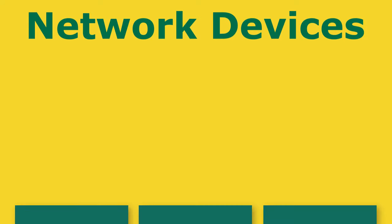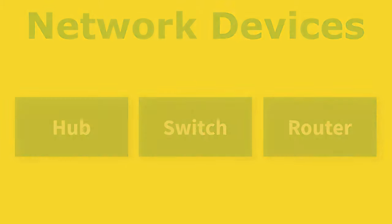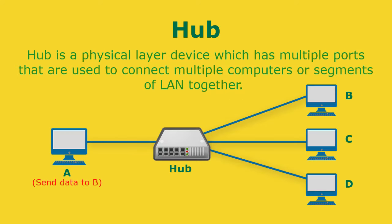With a NIC or Wi-Fi card your device is ready to talk to other devices. Now you need either a hub, switch, or router to connect to other computers. A hub is a physical layer device which has multiple ports used to connect multiple computers or segments of a LAN together. Data is transferred in packets to the entire network, so when a host sends a data packet to a hub, the hub copies the data packet to all of the ports it is connected to. All the ports know about the data, and the port for whom the packet is intended claims the packet.